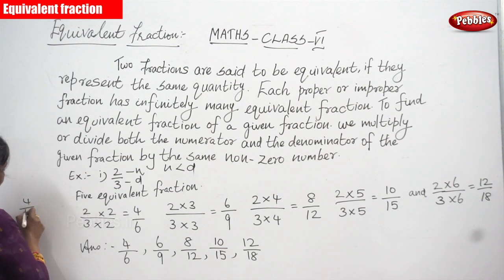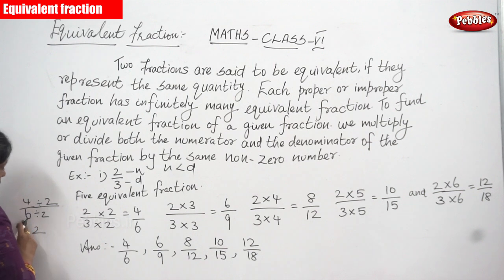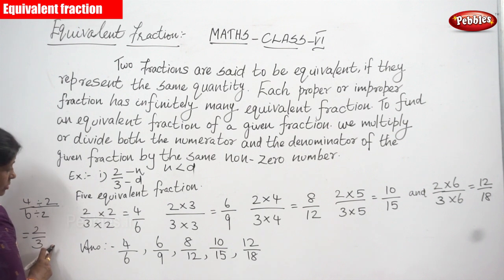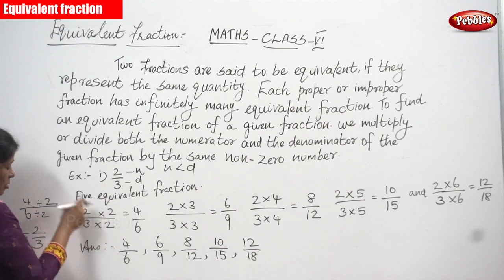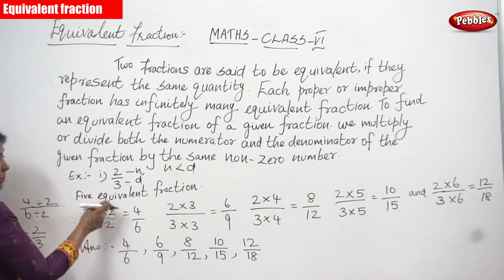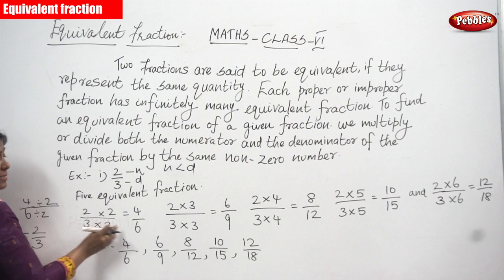Look at 4 by 6 — if you divide by 2, you can get back the same number. 4 divided by 2 gives 2, and 6 divided by 2 gives 3. So 2 by 3 and 4 by 6 are equivalent fractions. I am using multiplication as well as division. So the equivalent fraction of 2 by 3 is 4 by 6.